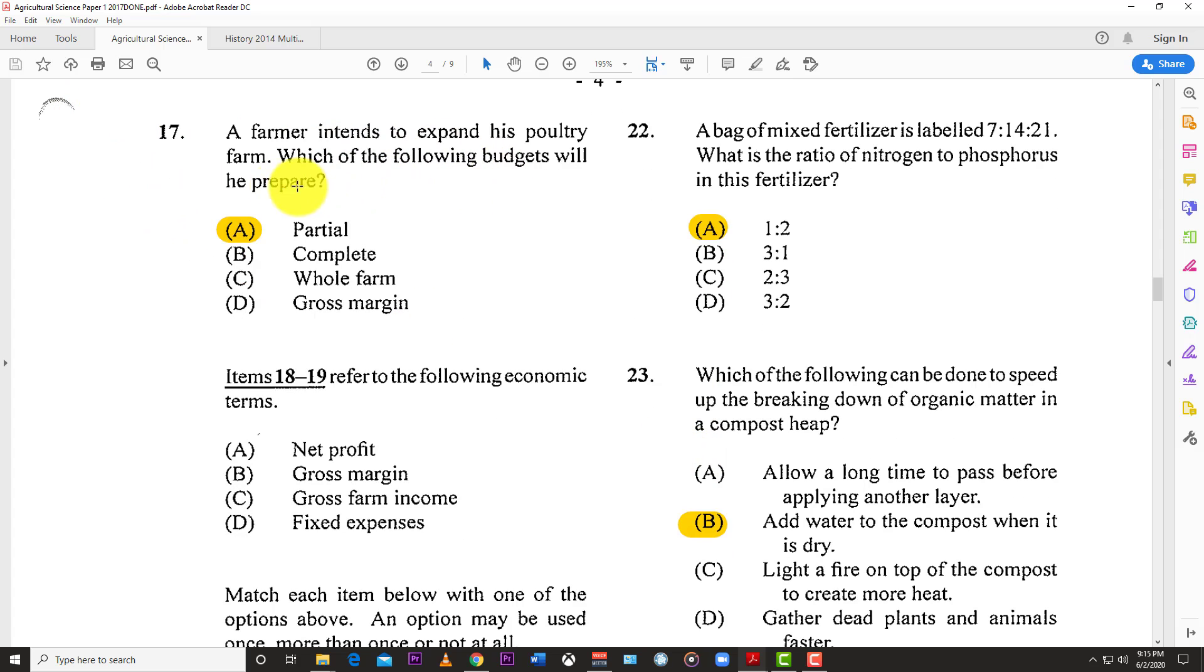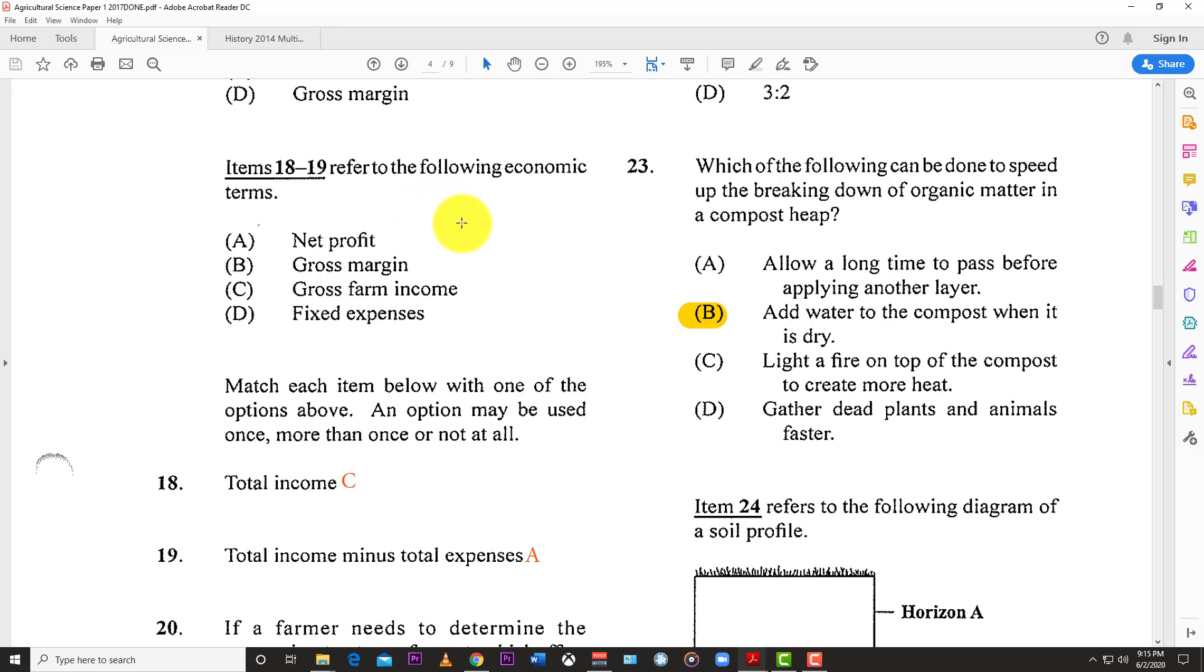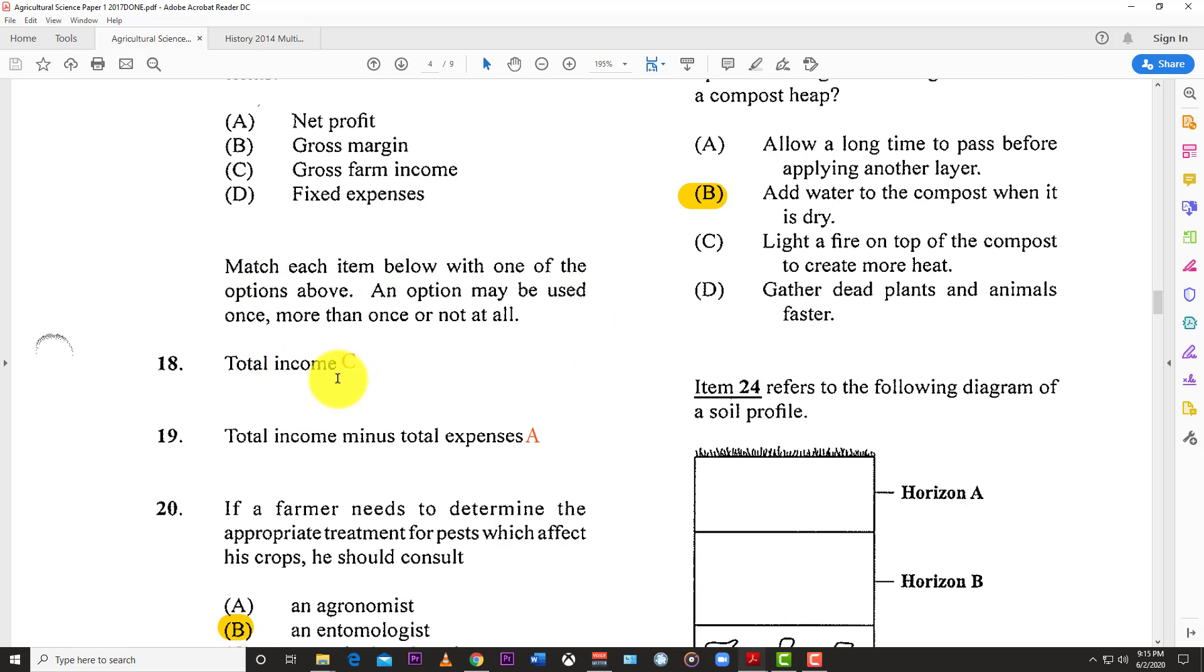Number seventeen: A farmer intends to expand his poultry farm. Which budget will he prepare? The best answer is A, a partial budget, because he's just expanding, not totally redoing his farm. He has to budget the cost of the expansion, so it's partial.